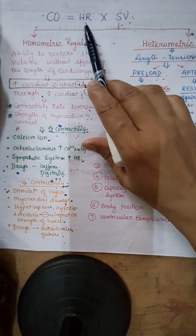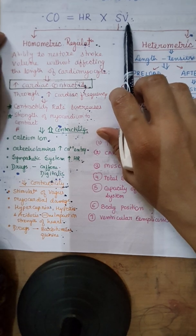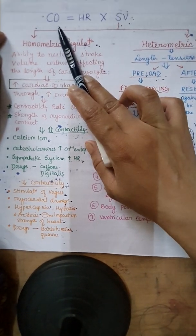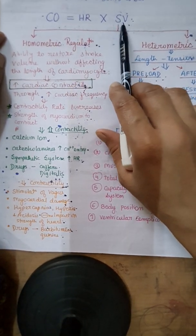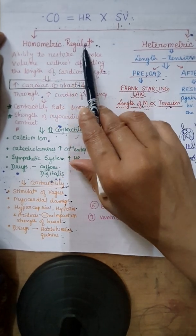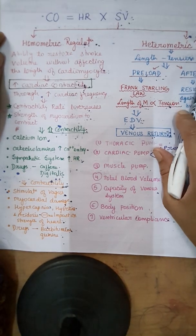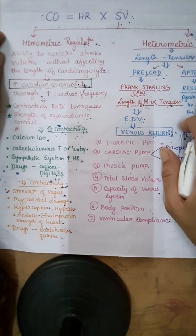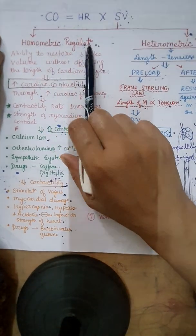Cardiac output is the product of heart rate and stroke volume, so the factors which affect heart rate and stroke volume can also affect cardiac output. In the last lecture we discussed stroke volume, which is regulated by two types of regulation: homometric regulation and heterometric regulation. In my last lecture I discussed heterometric regulation; today I will discuss homometric regulation of cardiac output.